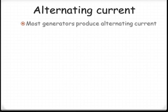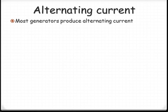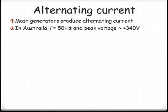In Australia, current is generally produced at 50 Hz, that is it cycles or alternates back and forth 50 times every second. And it has a peak voltage of plus or minus 340 volts or 680 volts peak to peak.